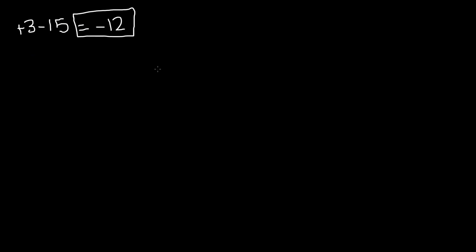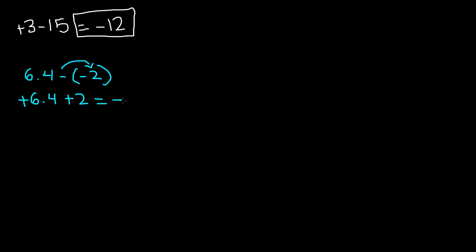For our last problem, we have decimals and negative numbers: 6.4 minus, in parentheses, negative 2. There's a minus outside the parentheses, so we distribute it to the negative 2. Negative times negative gives us positive, so it becomes 6.4 plus 2. Both numbers are now positive — same sign — so we keep the positive and add. Writing 2 as 2.0 and adding gives us 8.4. Our final answer is 8.4.